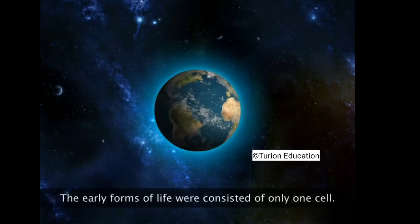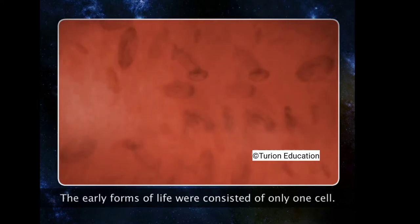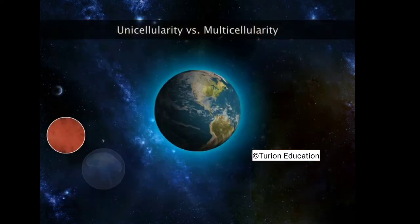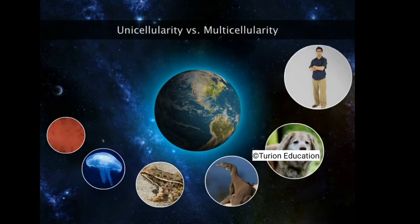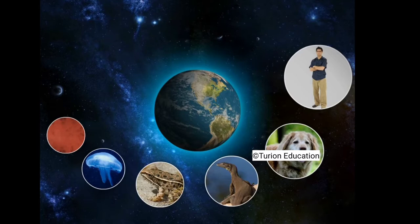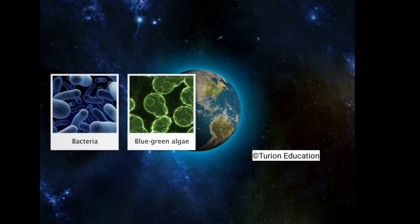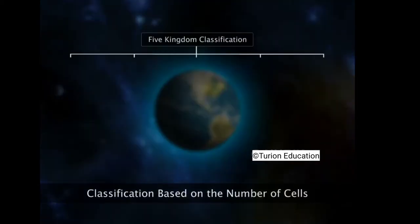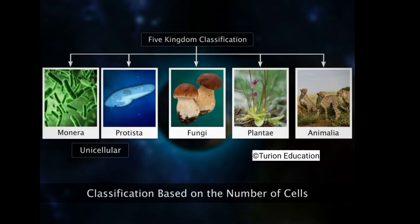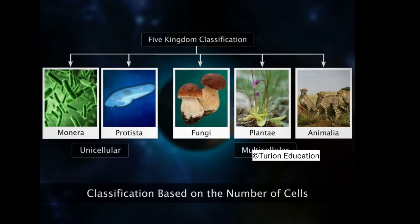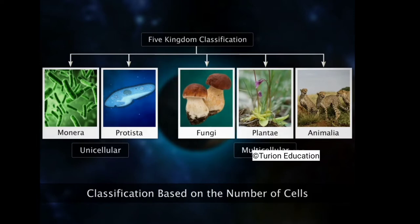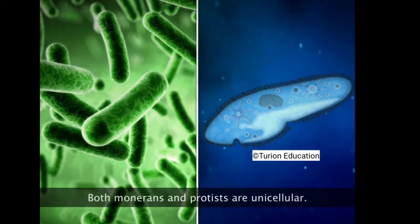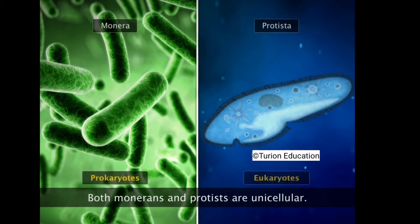The early living forms to have evolved on earth were unicellular, and over the years multicellular forms evolved. However, unicellular forms still exist today — bacteria, blue-green algae, amoeba, and plasmodium are unicellular organisms. In the five-kingdom classification, unicellular organisms are placed under Kingdom Monera and Kingdom Protista, whereas multicellular organisms are placed under Fungi, Plantae, and Animalia. Monerans are prokaryotes whereas protists are eukaryotes.